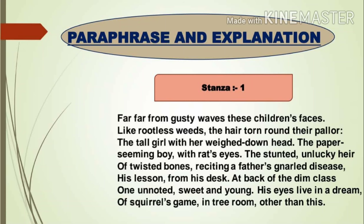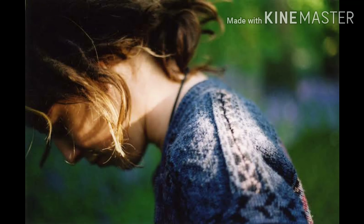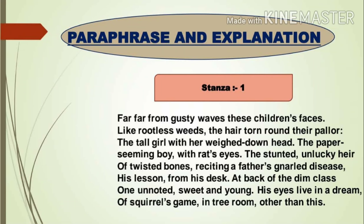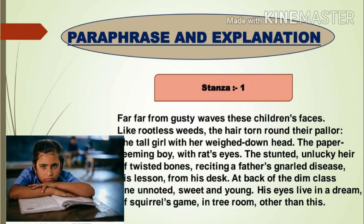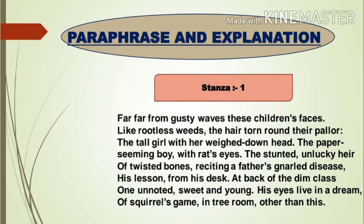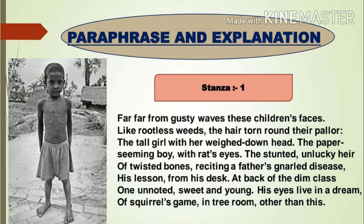Spender describes some children sitting in that classroom to show their pathetic conditions. He says a tall girl sitting there is depressed and keeps her head down, weighed down by the burdens of life and family responsibilities. There is also a very thin boy sitting in a corner — the 'paper-seeming boy' — so thin he resembles paper. His eyes are bulging out like those of a rat, suggesting that despite malnutrition, he is curious and eager to learn.